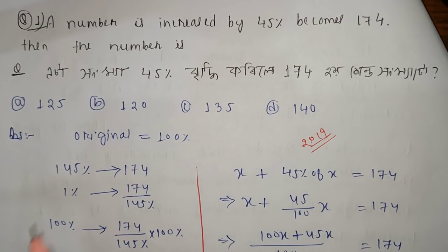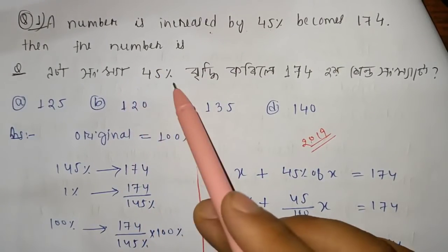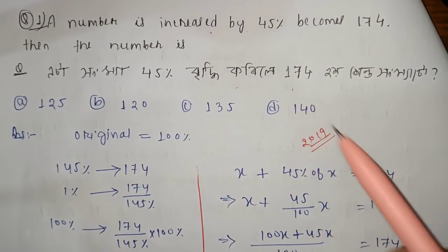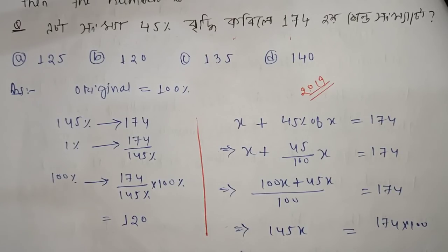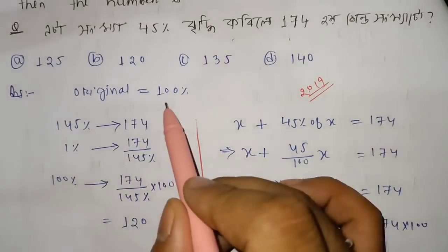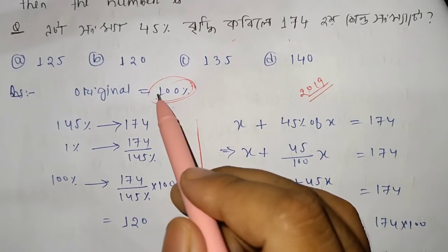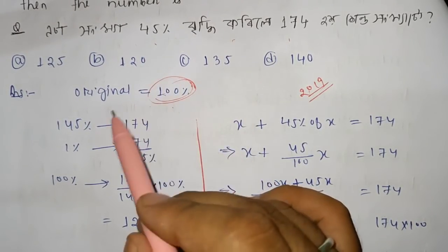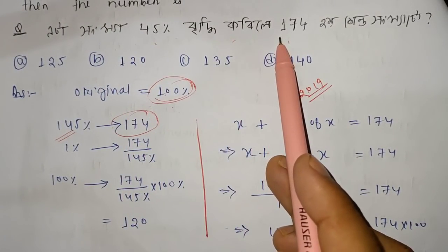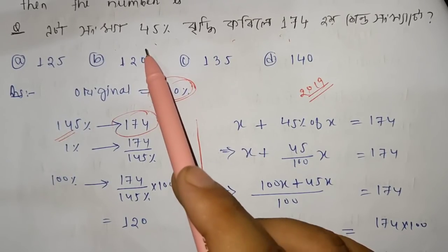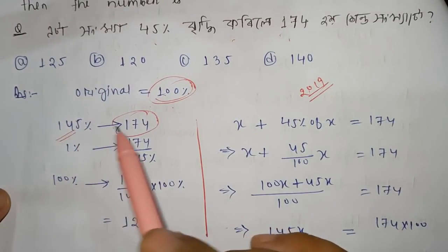The first question: a number is increased by 45% and becomes 174. What is the number? If the original number is 100%, then after a 45% increase, 145% equals 174. So 145 is equal to 174.